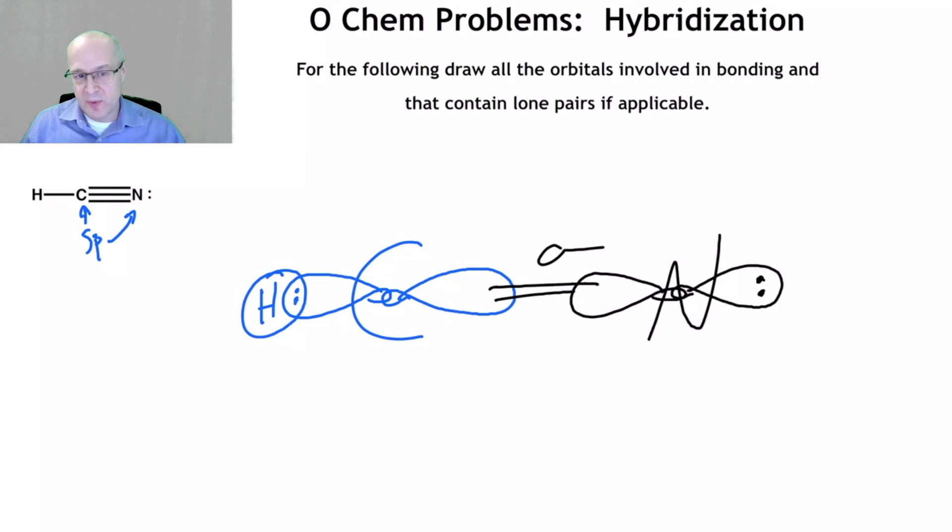So that means everybody has two P orbitals. The carbon and the nitrogen both have two P orbitals. So they've got to draw them in, do the best you can, be as neat as you can. There's one of my P orbitals there. There's another one of my P orbitals there. And they are overlapping.